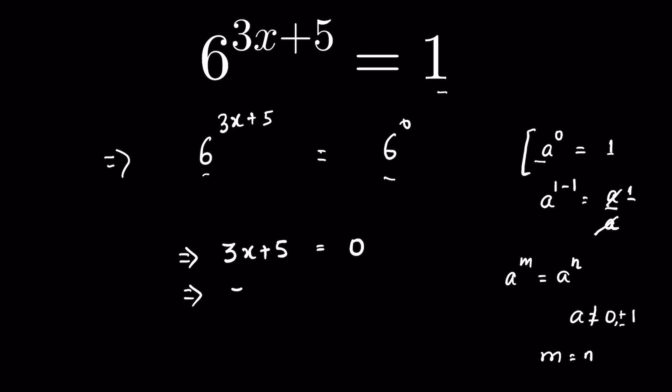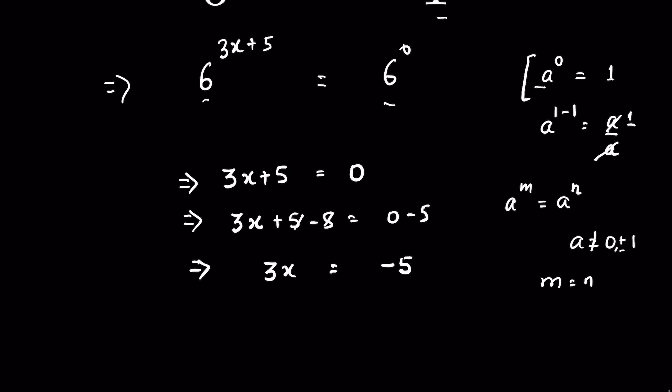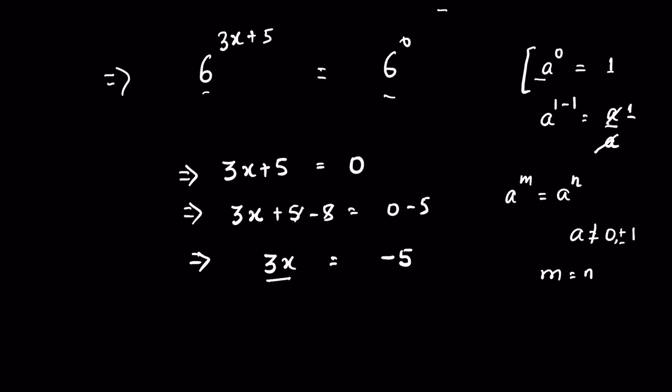Or 3x plus 5, subtract 5 from both sides, so 5 and 5 cancel. 3x is equal to minus 5. Now divide both sides by 3, so 3 and 3 cancel. Or x is equal to minus 5 upon 3.